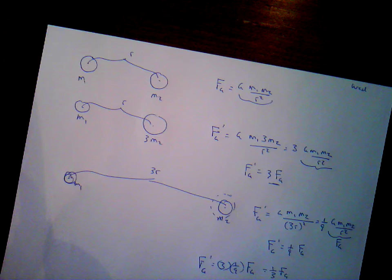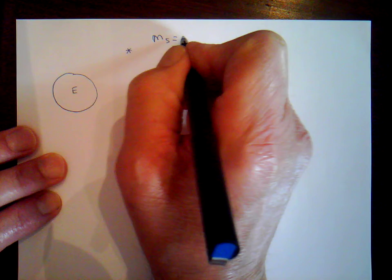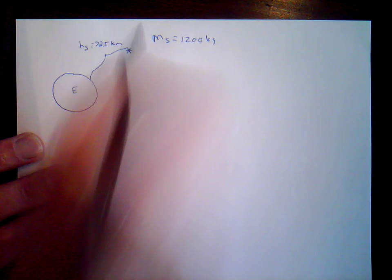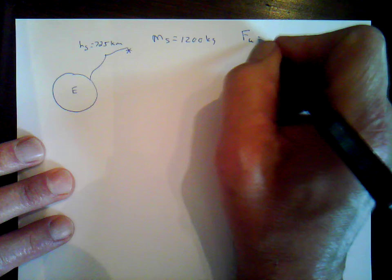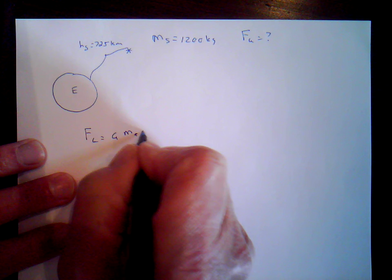Now let's look at an example problem similar to problem number 4. Let's say we have the Earth and a satellite above the Earth. The mass of the satellite is 1,200 kilograms. The height of the satellite — the distance from the Earth's surface to the satellite — is 725 kilometers. We want to know: what is the gravitational force on that satellite? The equation is: force of gravity equals g times the mass of the Earth times the mass of the satellite over the orbital radius of the satellite squared.